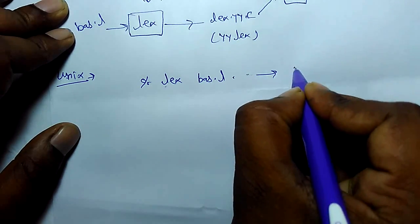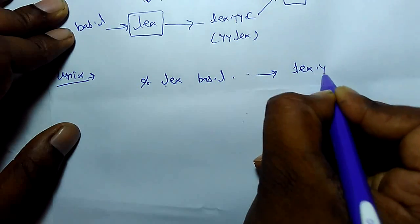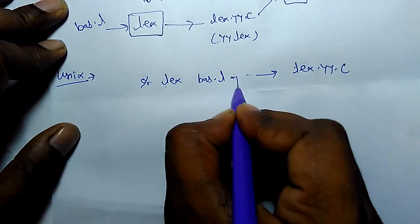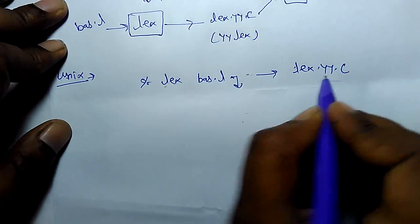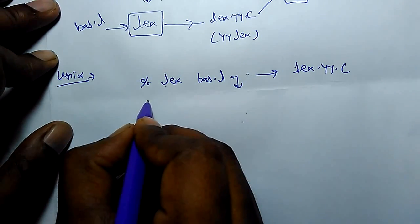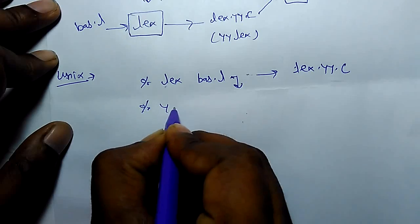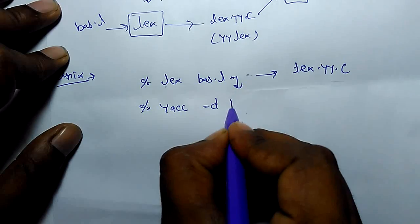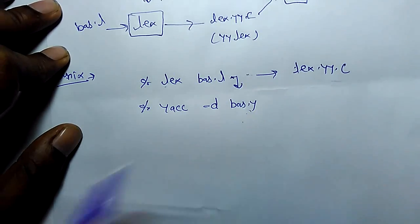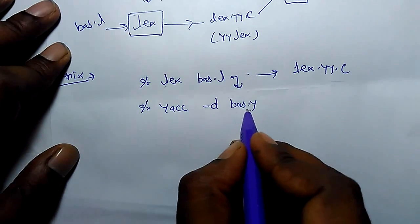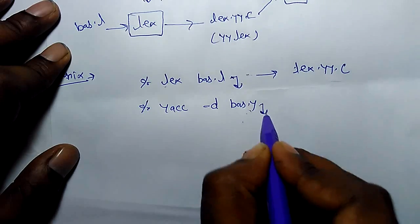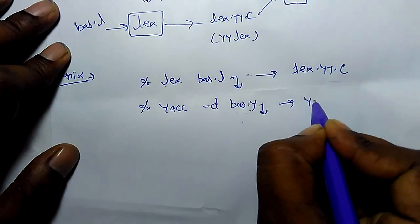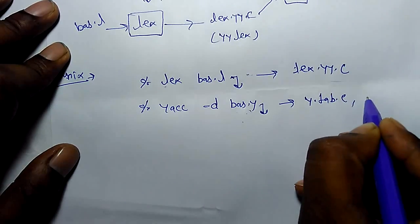The moment you will enter it will create lex.yy.c file. Then for YACC command is there with definition hyphen d bash.y, that is bash.y is a grammar file. You enter and you will get y.tab.c file and y.tab.h file.